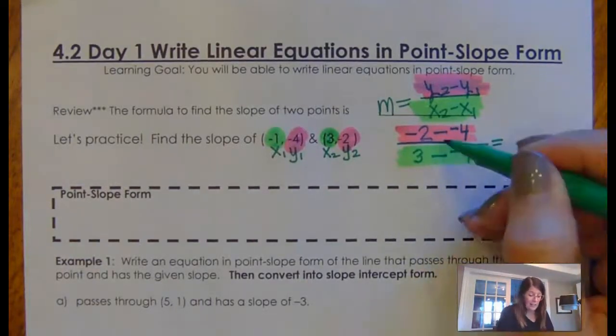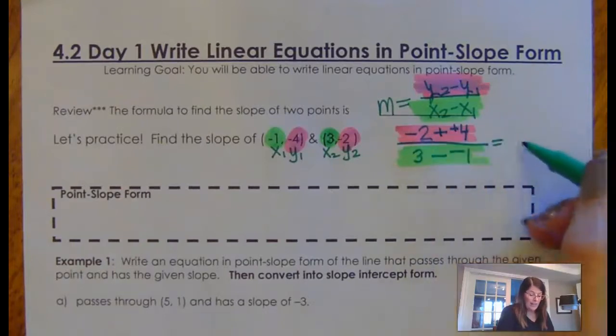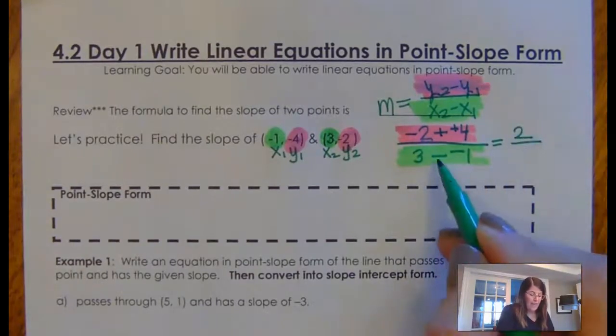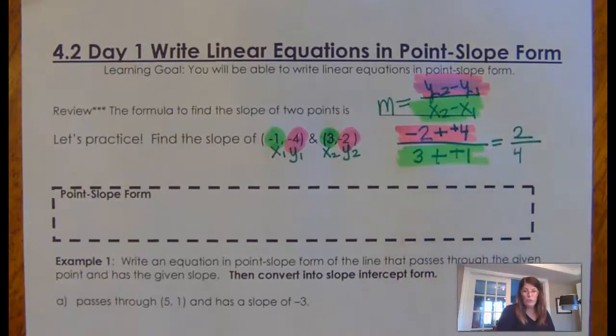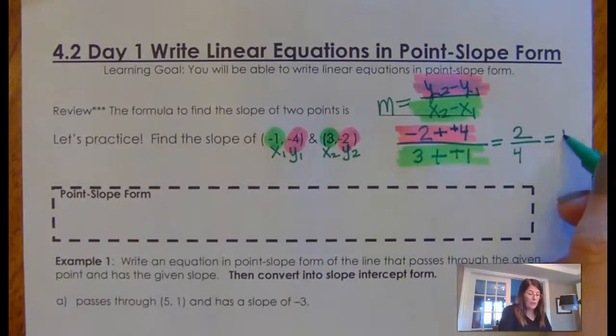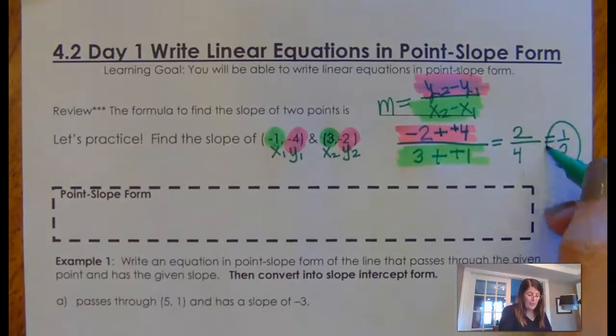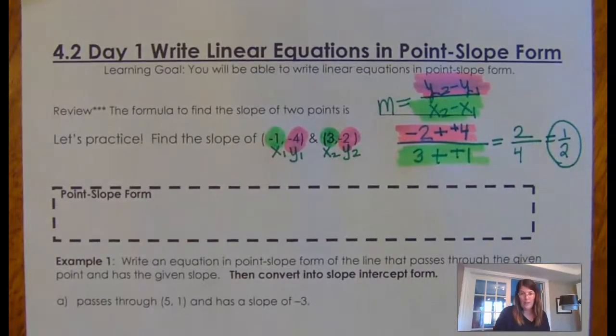Now, a minus and negative is going to turn that into a positive. Negative 2 plus 4 is 2. And 3 minus negative 1 is going to make that a positive, so it's 2 fourths. But you would always want to simplify that so you get that your slope is 1 half. Okay? So be really careful with the minus and the negatives. And there's nothing wrong with putting these in your calculator.